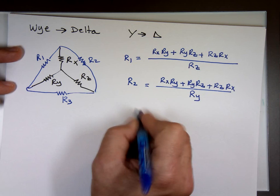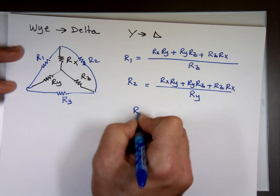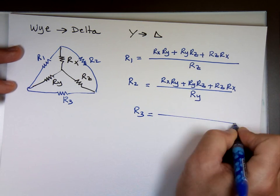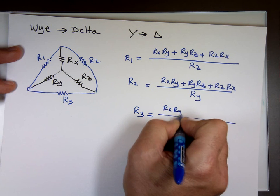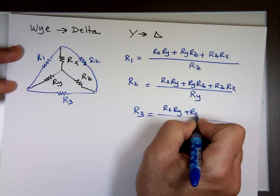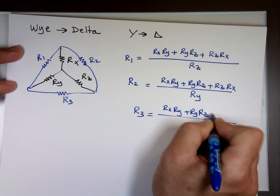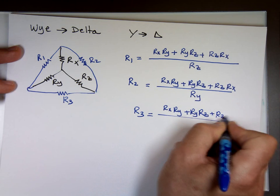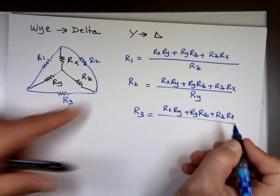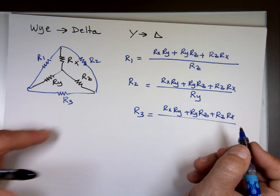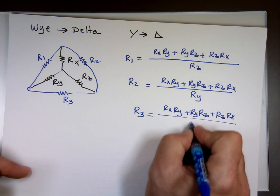And if I'm looking for R sub 3, again, the top is the same. And the bottom for R sub 3, whereas R sub 3 is this one, will be R sub X.